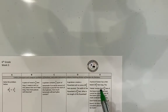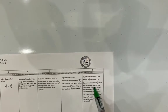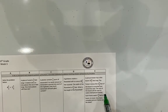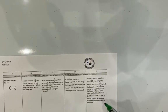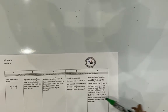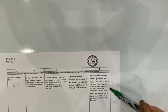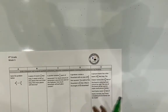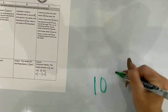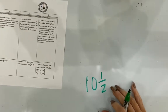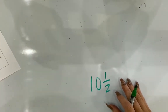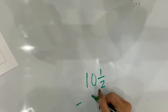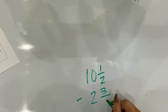The first problem says: a picture framer has a thin board 10 and a half feet long. The framer notices that two and three-eighths feet of the board is scratched and cannot be used. The rest of the board will be used to make small picture frames; each frame needs one and two-thirds feet of board. At most, how many picture frames can be made from the board? I know I have 10 and a half feet, and I need to subtract two and three-eighths.